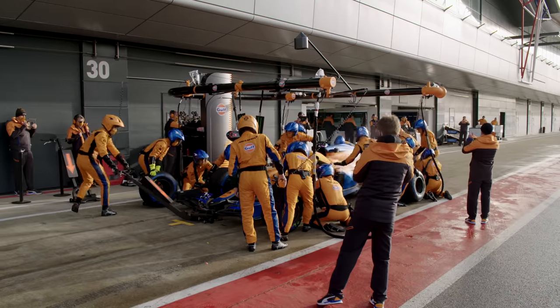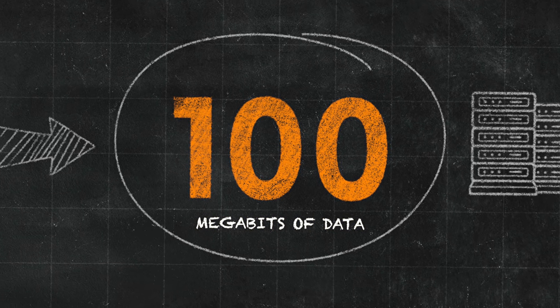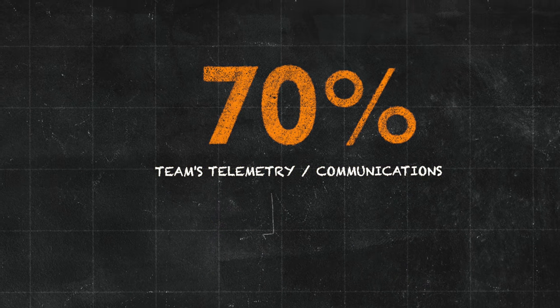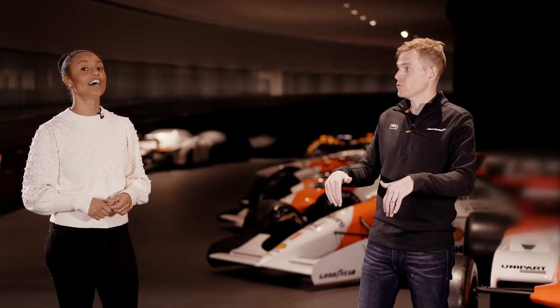So how much bandwidth do McLaren actually need for a Grand Prix weekend? Over a race weekend, each team has access to 100 megabits of data. The bandwidth is divided between different users: 70% of that is reserved for the team's telemetry and communications, and the other bandwidth is used for less important race activities — like sending selfies! Once the race is finished, all of the bandwidth is diverted to transfer all of the data back to base as quickly as possible. That's another late night for Mission Control — that's F1, it never ever stops.